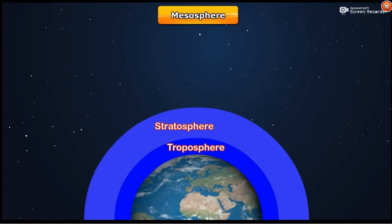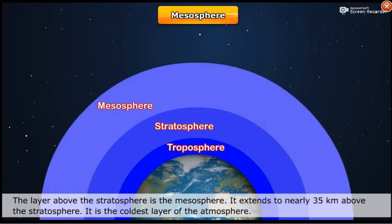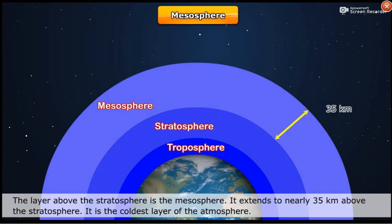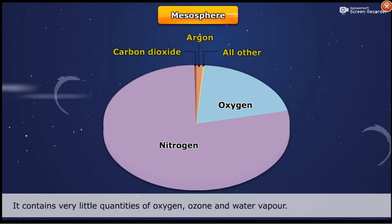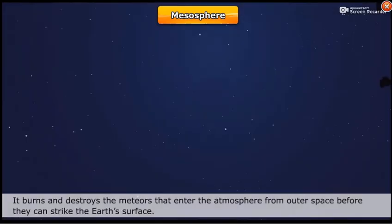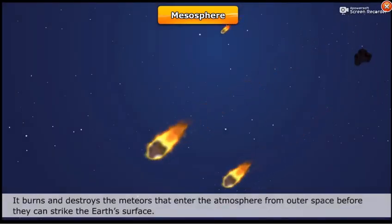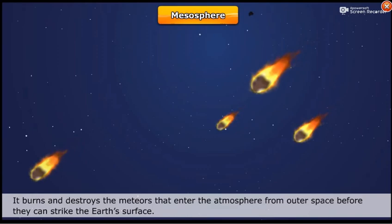Mesosphere. The layer above the stratosphere is the mesosphere. It extends to nearly 35 km above the stratosphere and is the coldest layer of the atmosphere. It contains very little quantities of oxygen, ozone, and water vapor. It burns and destroys the meteors that enter the atmosphere from outer space before they can strike the earth's surface.